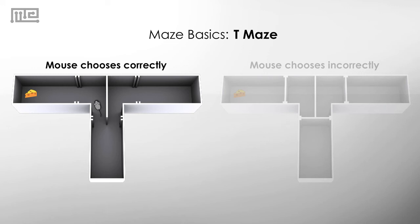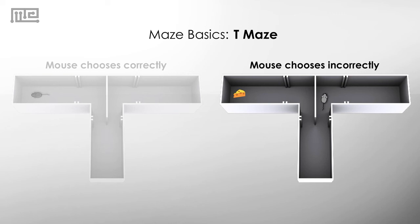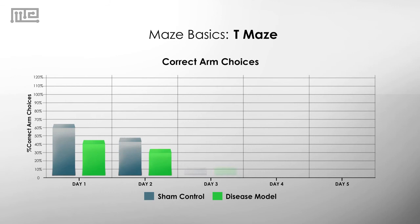Both doors open. Replace the animal at the start arena and allow it to choose a goal arm again. If it chooses the one it hasn't been to yet, it consumes the reward. If it chooses incorrectly, it will see that the food well is empty.